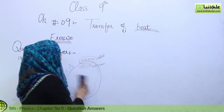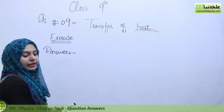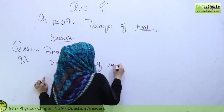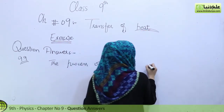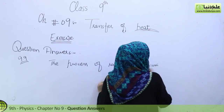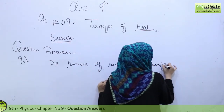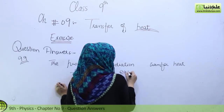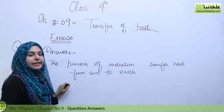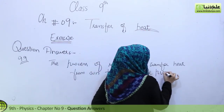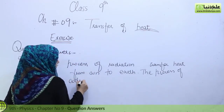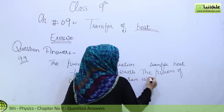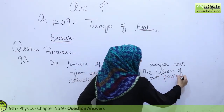So the best option we have left, and the way heat actually reaches Earth from the Sun, is through radiation. The process of radiation transfers heat from the Sun to the Earth, because neither conduction nor convection is possible.